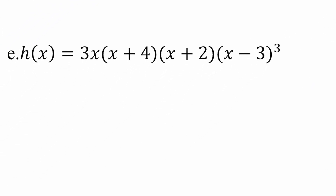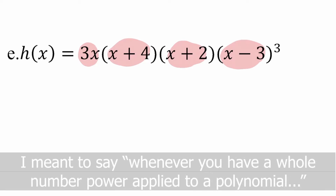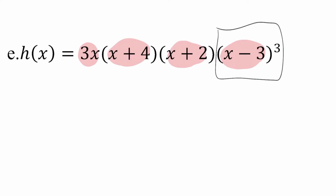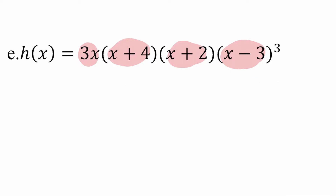This next one looks fairly complicated — we have a product of a bunch of power and polynomial functions. The first factor is a power function. The others are polynomials. Whenever you have a whole number exponent raised to a polynomial, the result is a polynomial itself. The product of two or more polynomials will always qualify as a polynomial. So if we were to expand everything out using the distributive property, we'd get a bunch of power functions added or subtracted. This is a polynomial function.